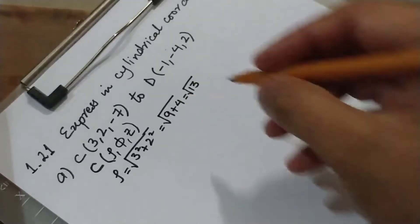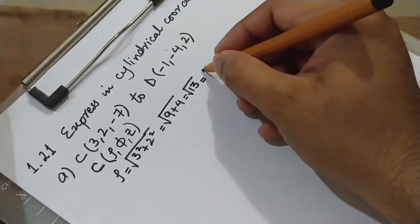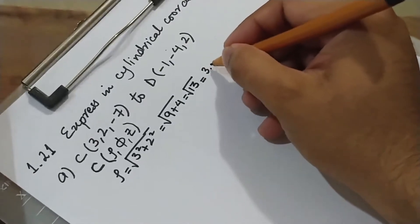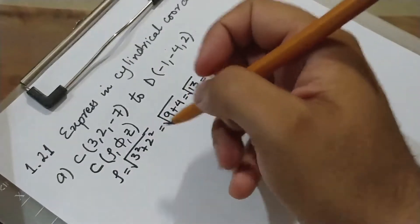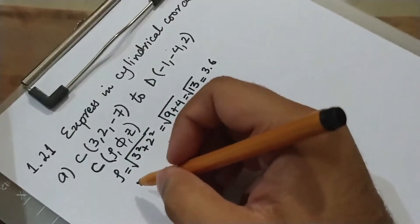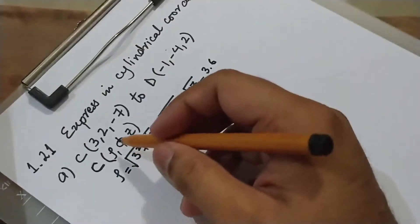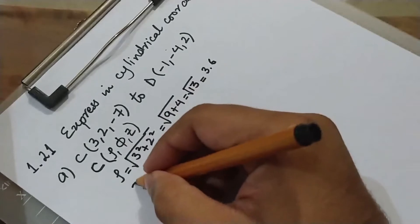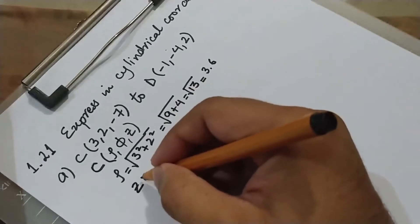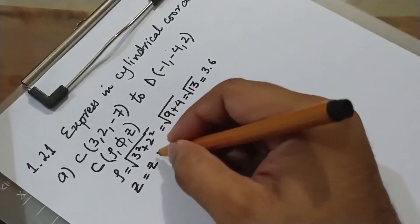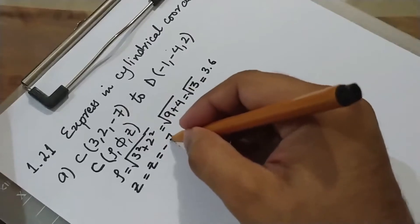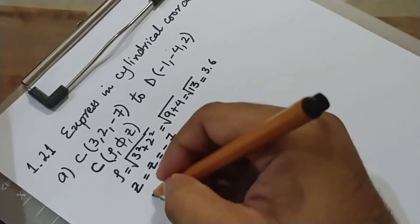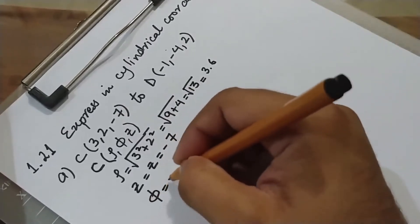Rho is approximately 3.6. Z is the same as z, so in this case it is minus 7.